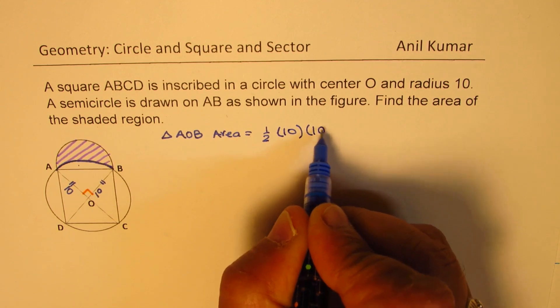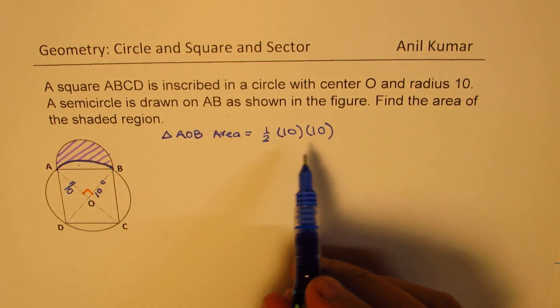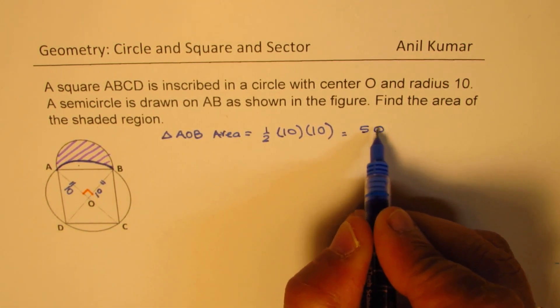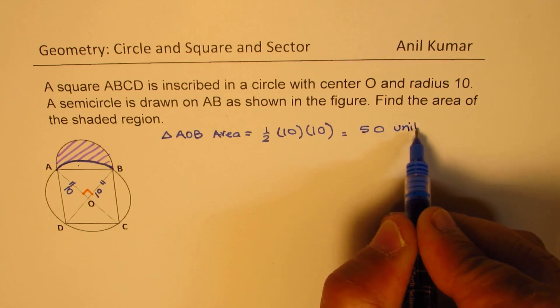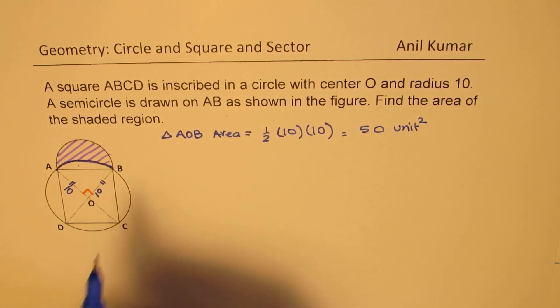times height, which is 10. So that product will give us the area, which is 5 times 10, as 50 unit square. So that becomes the area of the triangle.